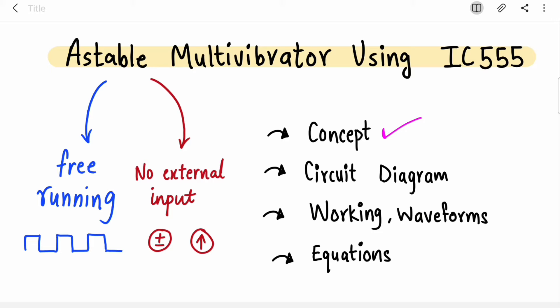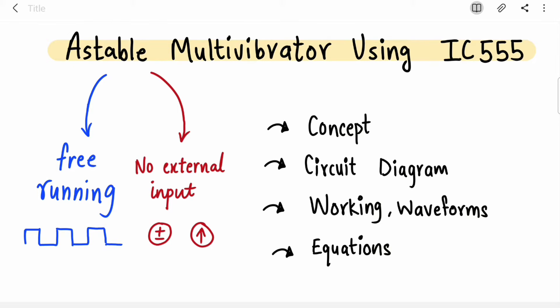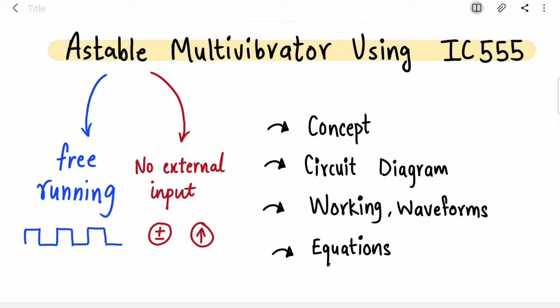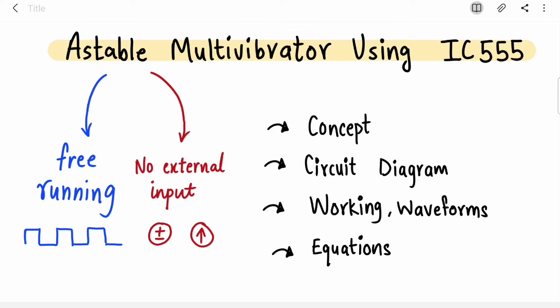Then we will deep dive into the circuit diagram and working. The concept of an astable multivibrator is very simple — the name itself is self-explanatory. It does not have any stable state, so it is a free-running multivibrator whose output keeps jumping between high and low.